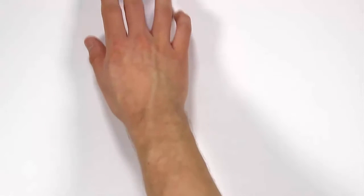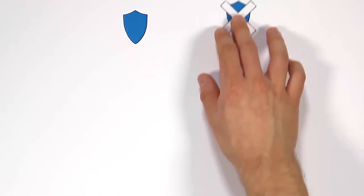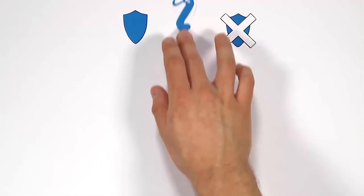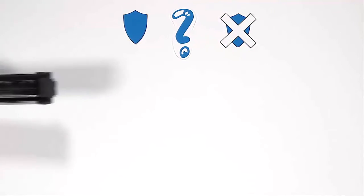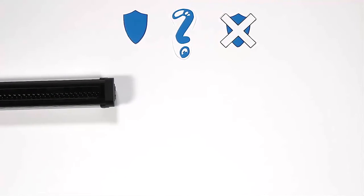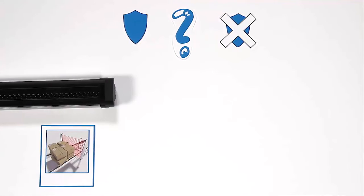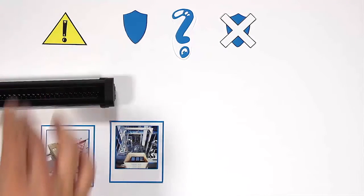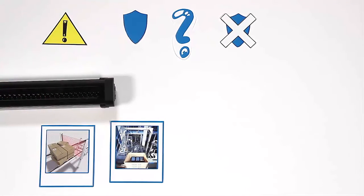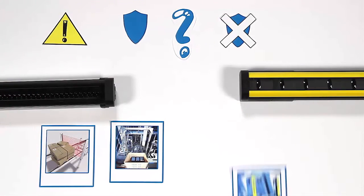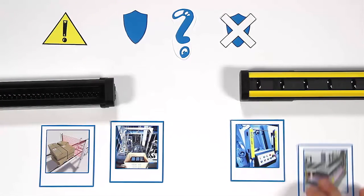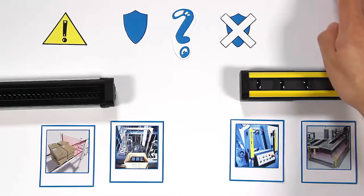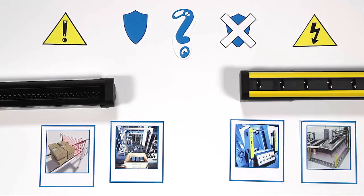What makes AOPD safe and where is the difference to non-safe solutions? Non-safe solutions are used for automation, so an occurring failure harms the machine only. Safe solutions protect people, as critical failures might be fatal and have to be avoided.